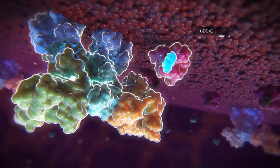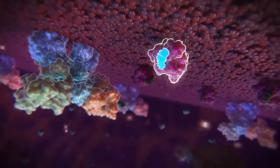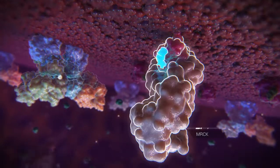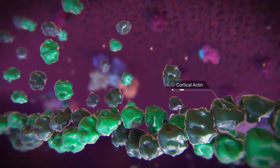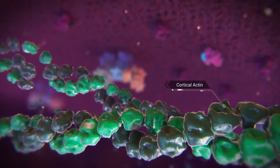FGD5 is a guanine nucleotide exchange factor for CDC42, which becomes activated and recruits the protein kinase MRCK to induce the formation of cortical actin.